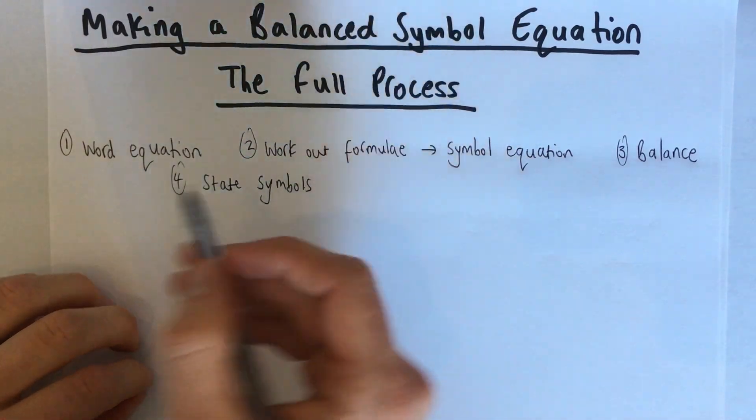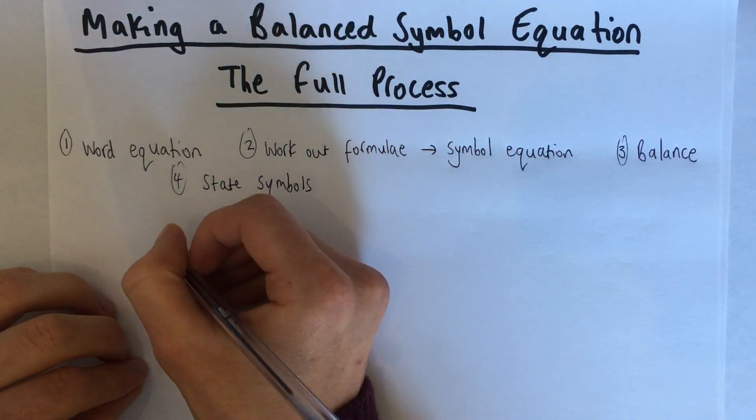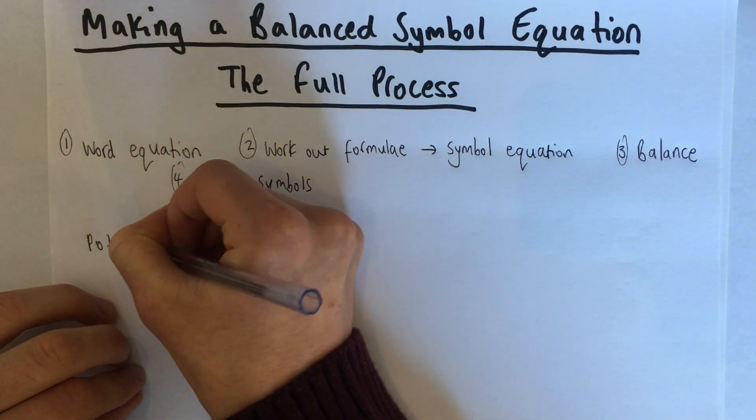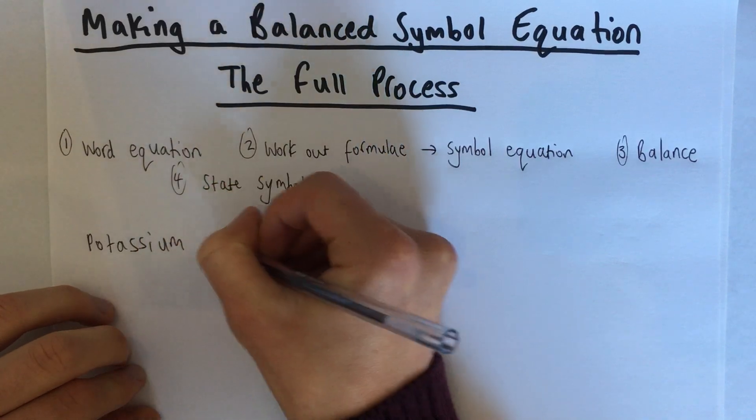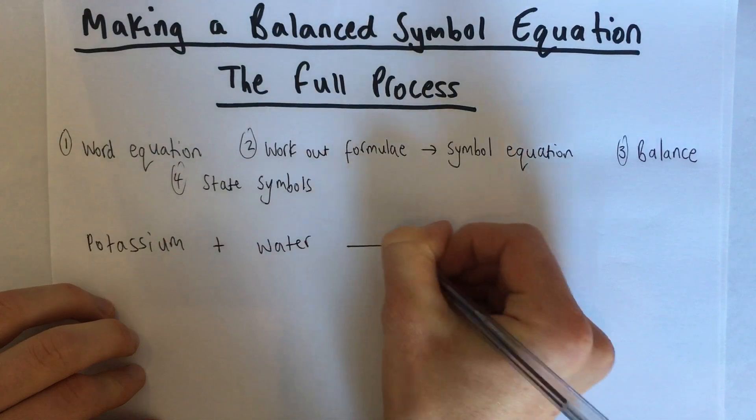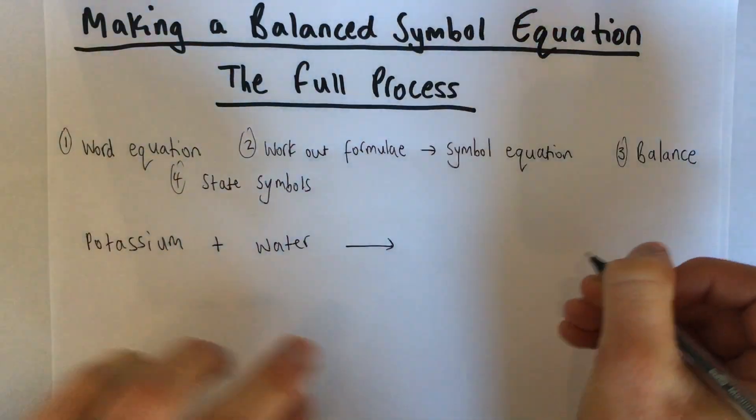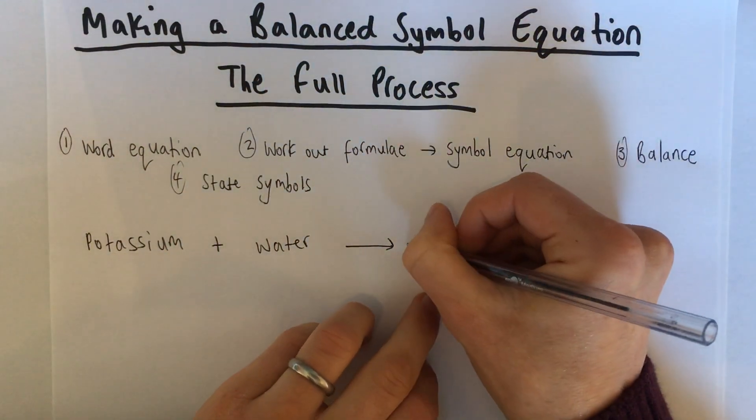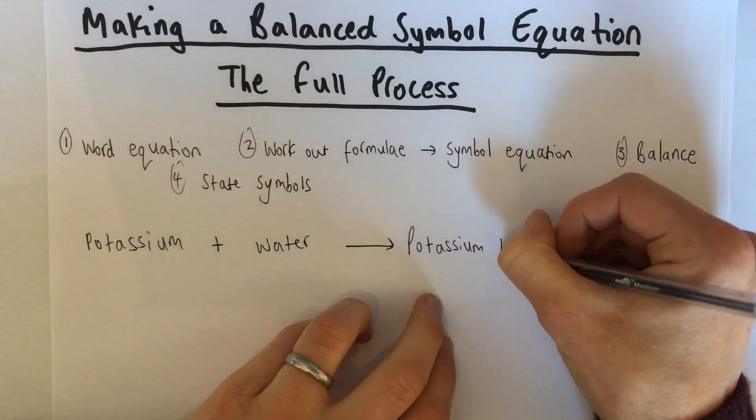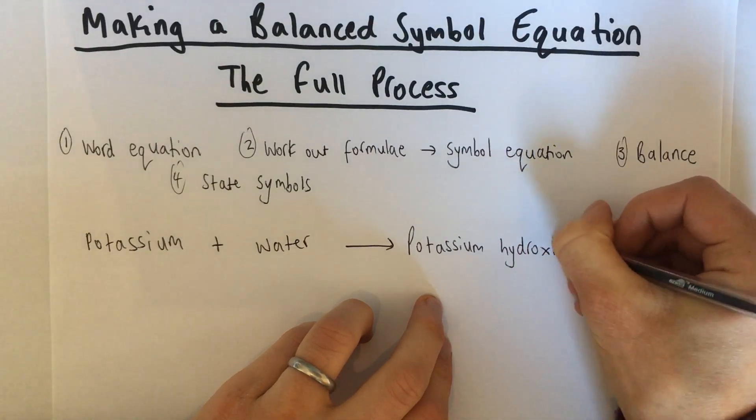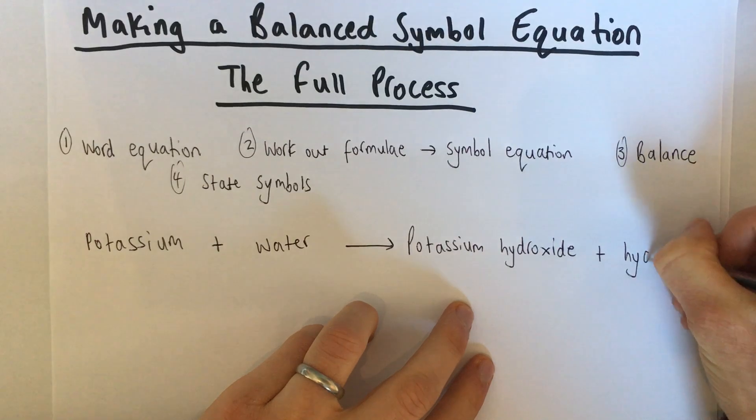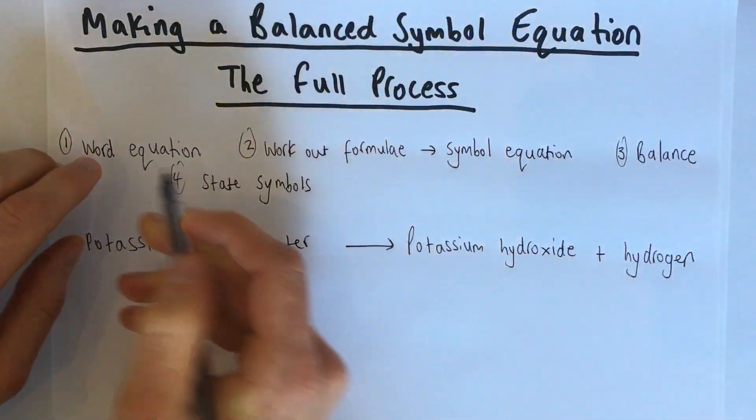Using that information then, I'm going to start with making a word equation. So I've said that we react potassium with water, so those are our reactants. So it's going to start potassium plus water. The arrow shows that there's a reaction. We start with the reactants we're going to make, and I said we make potassium hydroxide. And we give off hydrogen gas. Got our word equation.